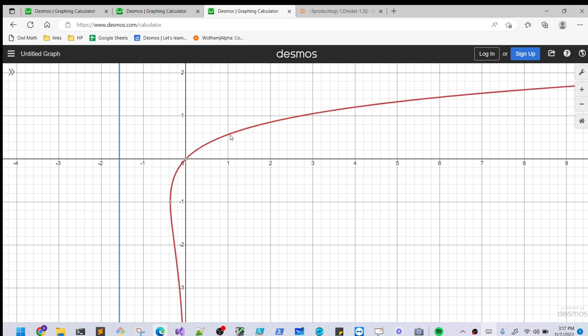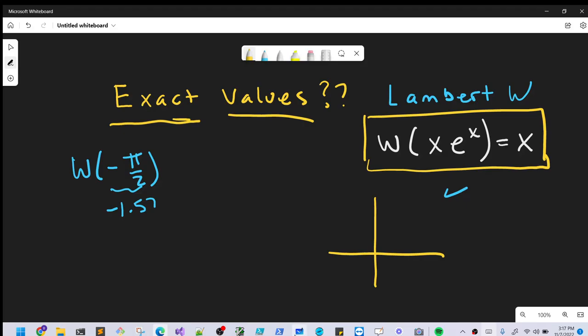So looking at our graph of the Lambert W function, this graph on the right here represents our real values of the Lambert W function. And then we have our minus pi over 2 in the complex range. So this value is going to be complex.